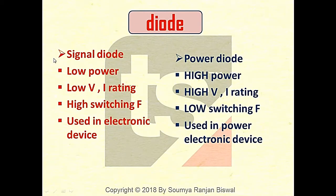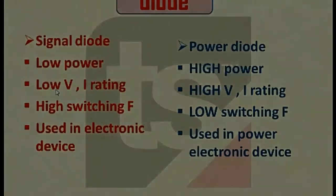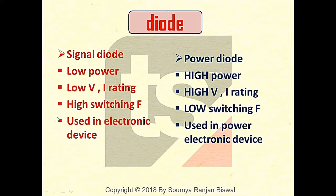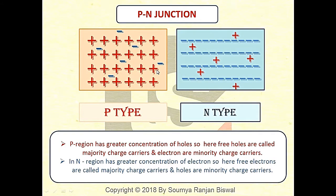There are two types of diode: one is the signal diode and another is the power diode. Signal diodes are used in electronic devices and power diodes are used in electrical devices. Signal diodes are low power devices, but power diodes have high current rating and voltage rating. Both signal diodes and power diodes have a P-N junction, but the difference is in their construction, which we will see later.